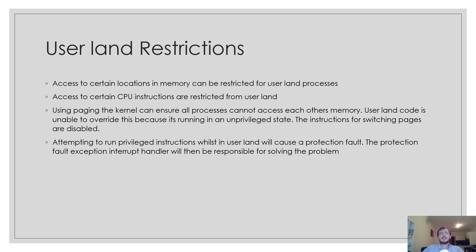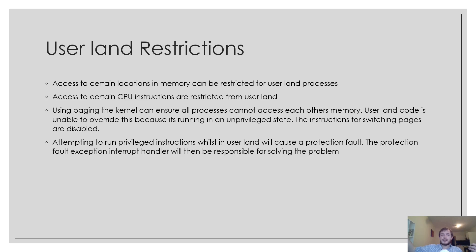Processes can even share the same virtual memory addresses because there's a guarantee they won't overwrite each other — we switch the page directory whenever we switch to a process. So 0x1000 virtual address might point to 0x2000 physical address for process A, but 0x1000 virtual address might point to 0x5000 physical address for process B. Attempting to run privileged instructions whilst in userland, i.e. ring 3, will cause a protection fault. The protection fault exception interrupt handler terminates the offending program, since the user program either has an error or is attempting something malicious.